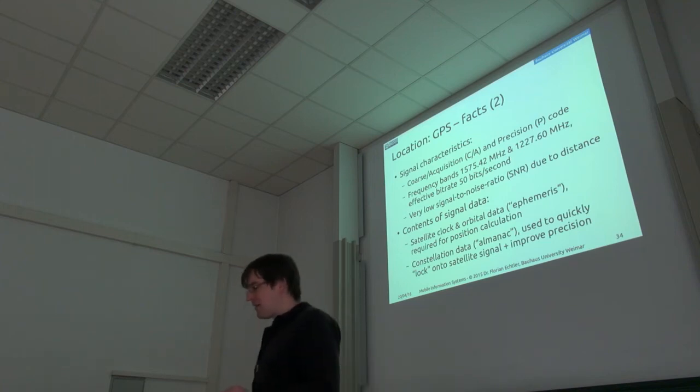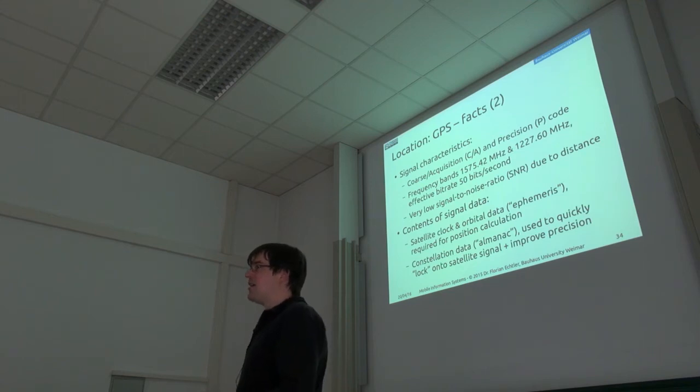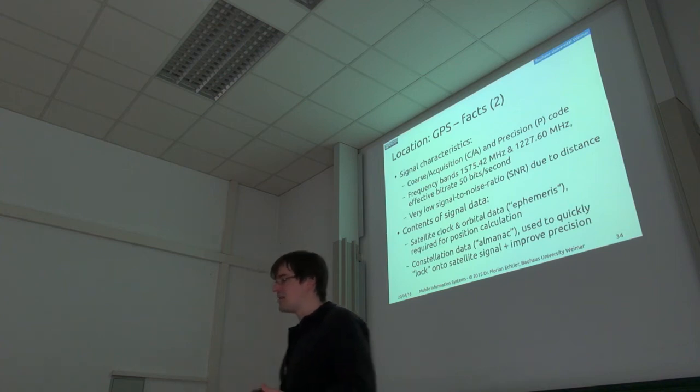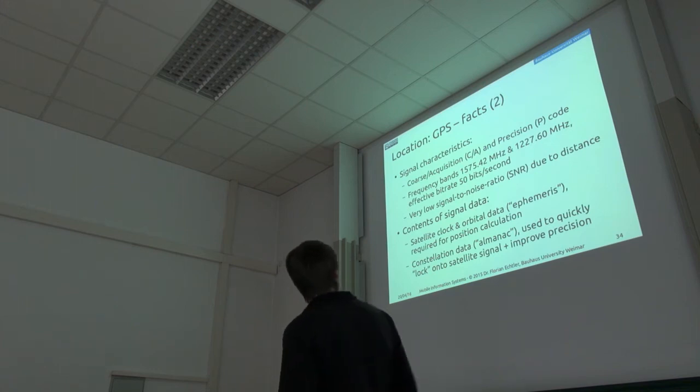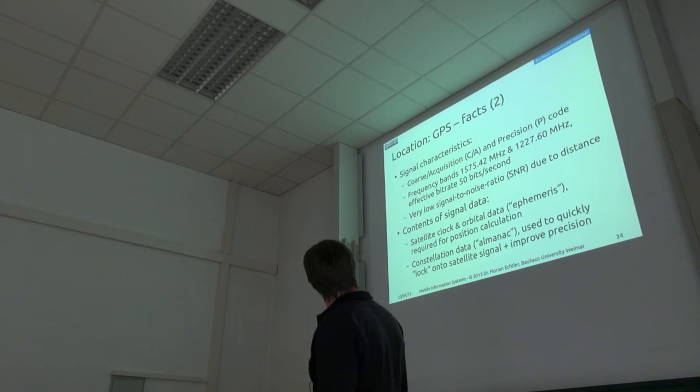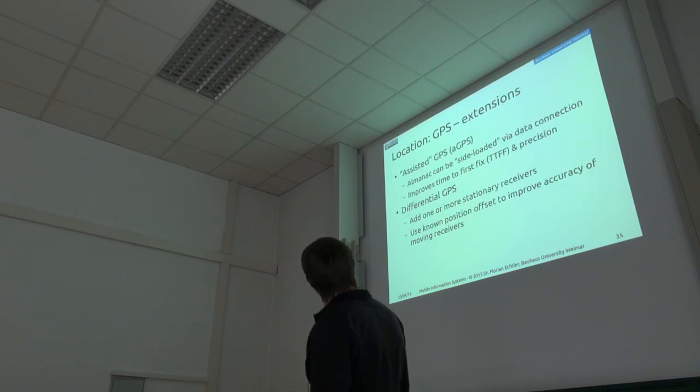But the capability is still there. Actually, until I think early 2000, there was this so-called selective availability, which was an intentional error in the civilian signals, so you couldn't use it for really precise navigation at all. So there was an error of, I don't know, 50 meters which was just introduced arbitrarily, and which was, of course, missing in this precision signal.